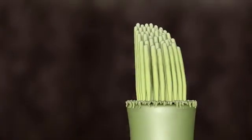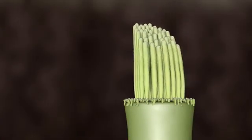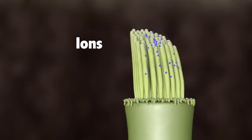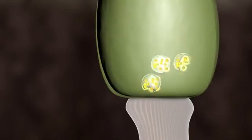The hair bundle on top of the hair cell turns these movements into electrical signals. As the hair bundles are moved, ions rush into the top of the hair cells, causing the release of chemicals at the bottom of the hair cells.